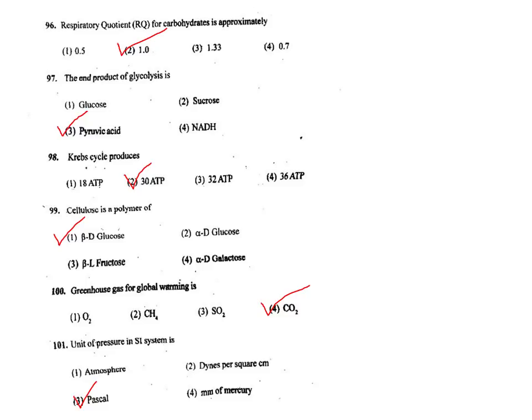Q99. Cellulose is a polymer of — cellulose is a polymer of beta-D-glucose, where glucose units are joined by beta-1,4 glycosidic linkages.